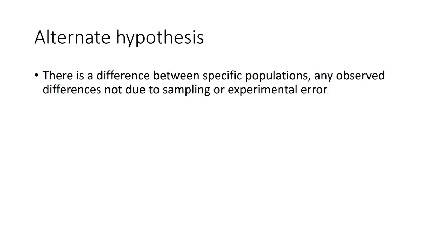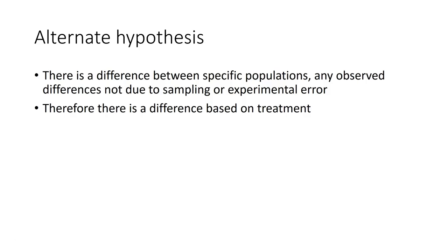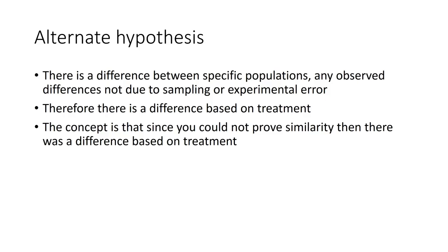We have the alternate hypothesis. In the alternate hypothesis, it says there is a difference between specific populations and any observed differences are not due to sampling or experimental error. If we can prove there's a difference between the populations and it's not due to sampling or experimental error, then we've got proof that the original hypothesis we are looking at is correct. Therefore we're looking for a difference based on treatment, not on sampling or experimental error. Since you cannot prove similarity, then there was a difference based on treatment.